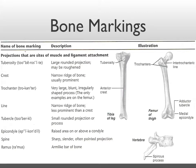The next term is trochanter — large, irregularly shaped processes found only on the femur. The trochanters serve as points of attachment for muscles of the thigh and buttocks. Between the two trochanters is another bone marking called the intertrochanteric line. A line is similar to a crest in that it's a narrow ridge of bone, but a line is much less prominent than a crest, making it more difficult to identify and locate.